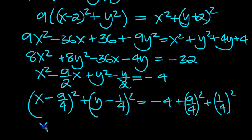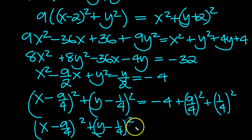So what do we get then? We get x minus 9 over 4 squared plus y minus 1 quarter squared is equal to... 9 over 4 squared.